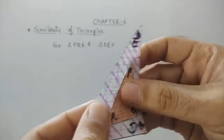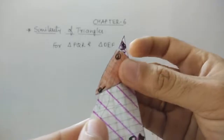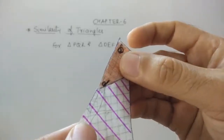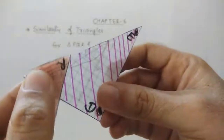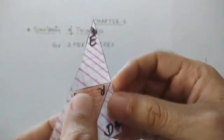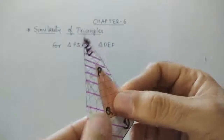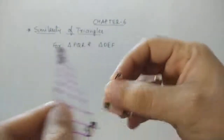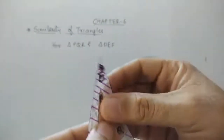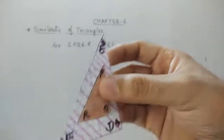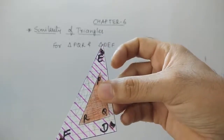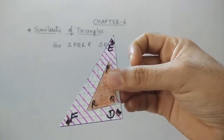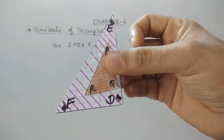Can we say Q and E are corresponding angles? No — they are not overlapping. Can Q correspond with F? No, they are not overlapping either. So I hope students you understand which are the corresponding angles. To summarize: P equals E, Q equals D, and R equals F.